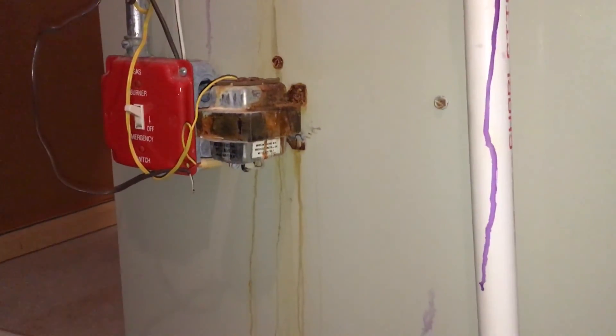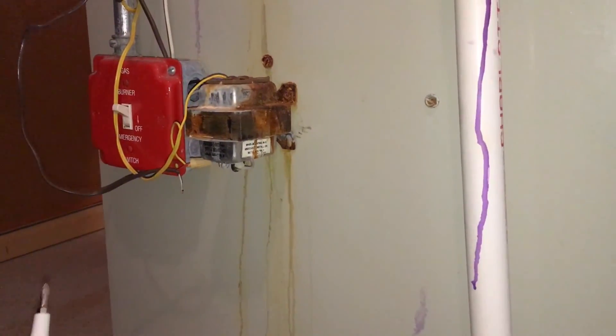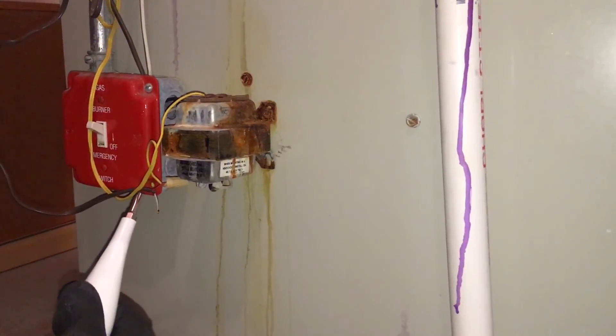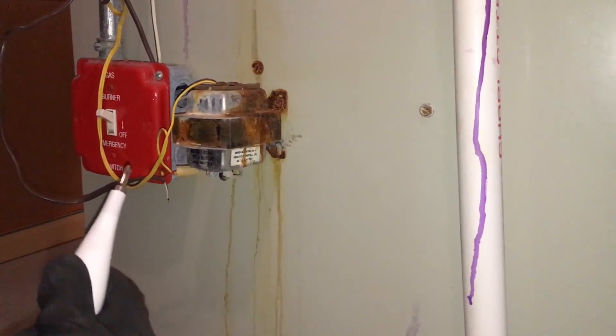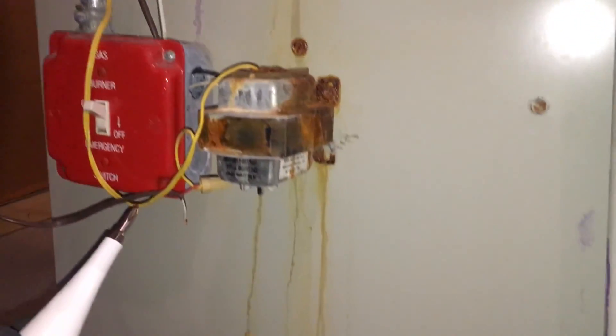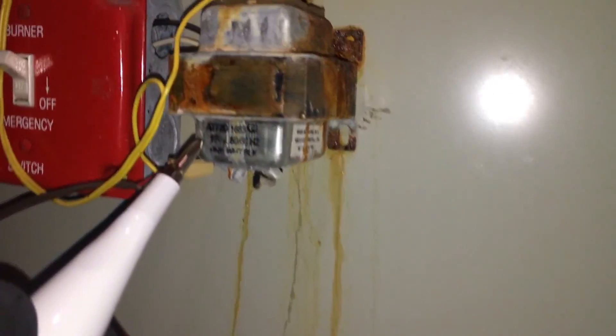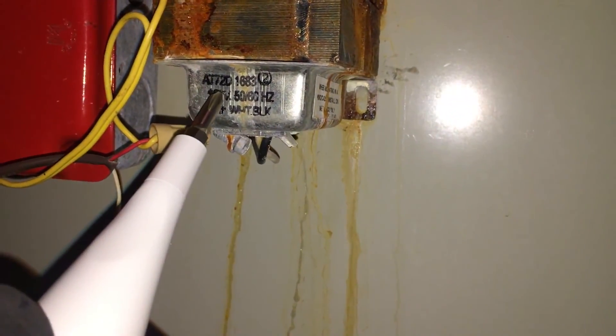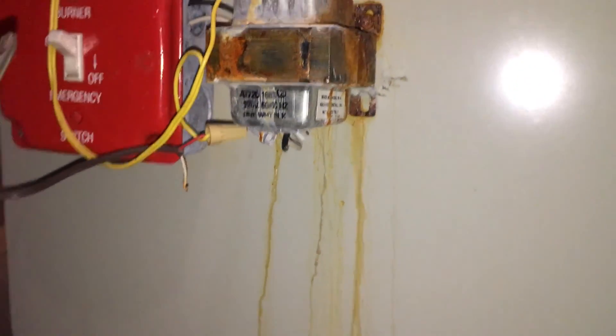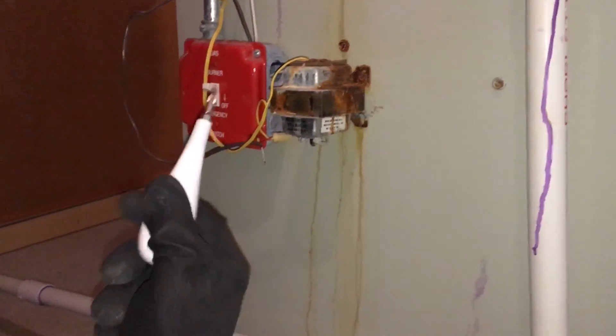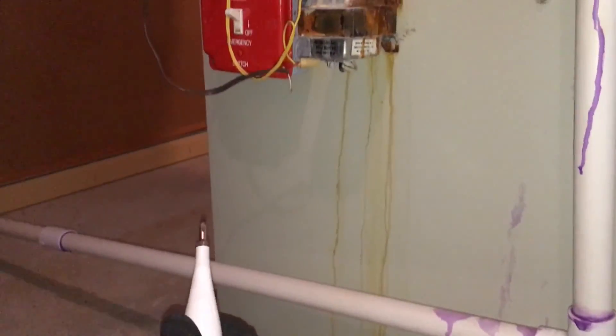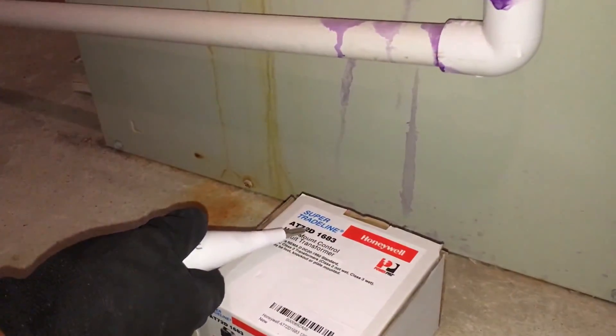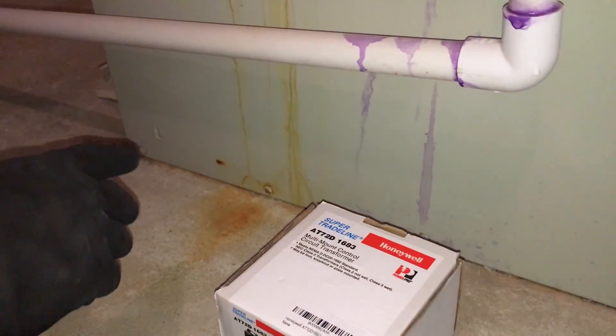In this case, the first thing is to identify which transformer you have to buy. In my case, what I've done is I've just looked around the transformer and I saw that the number of this transformer is AT72D1683. Then I started searching on Amazon, eBay, and Home Depot sites and I found the exact same match, which is this one: AT72D1683. This means it's a pretty straightforward project because it's the exact replacement for the transformer.